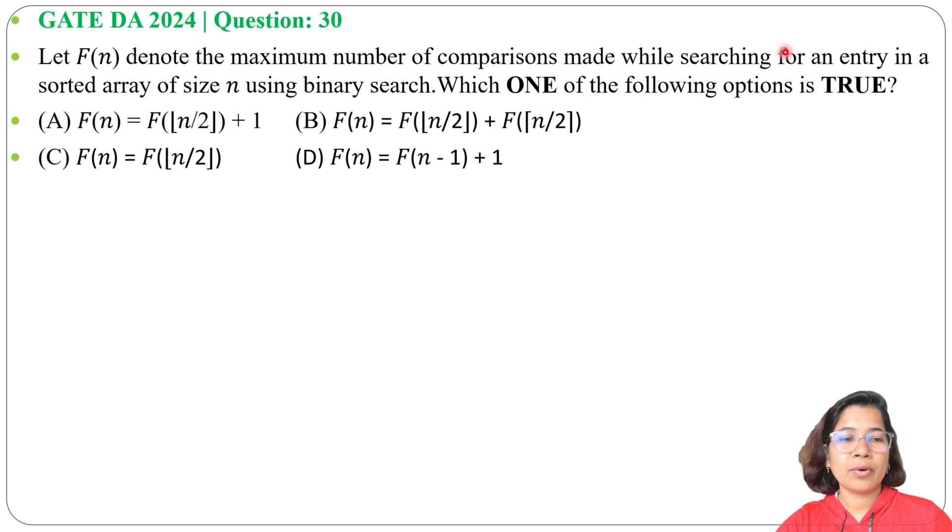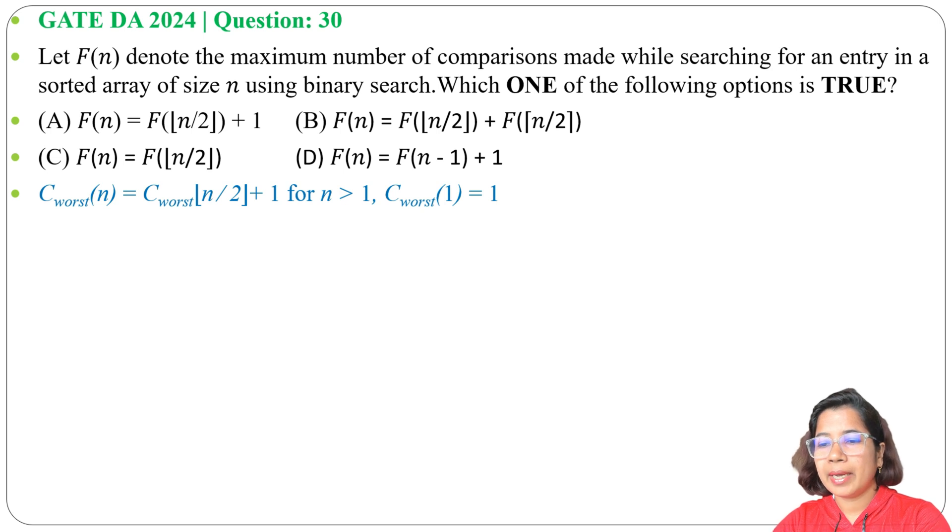Which one of the following options is true and four options are given. This is a direct question. In case of binary search, maximum number of comparisons required is C of n equals to floor of n divided by 2 plus 1. Worst case means it's the maximum number of comparisons.